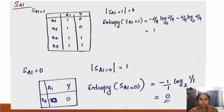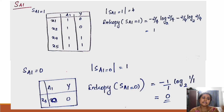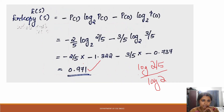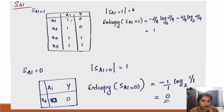Here we will find the answer. What we will do is consider attribute A1. If we take A1 and evaluate its subsets. The rows are numbered 1, 2, 3, 4 — these are the corresponding y values.